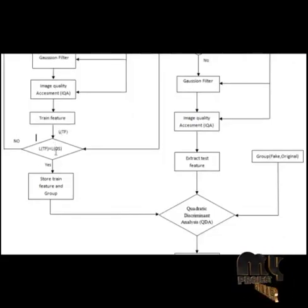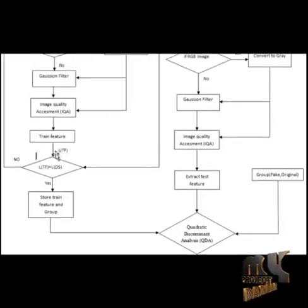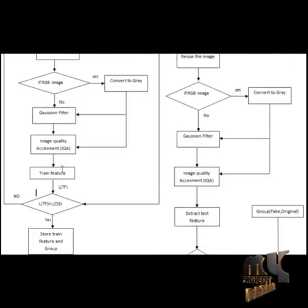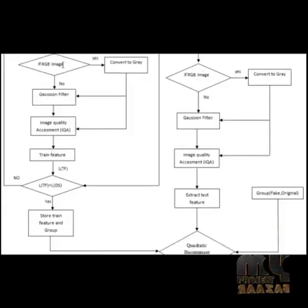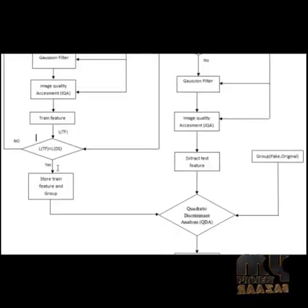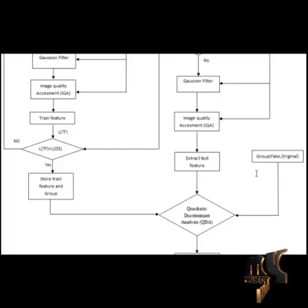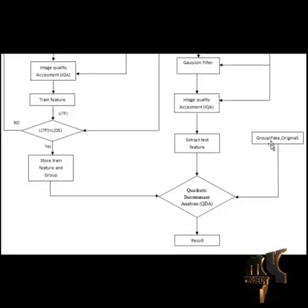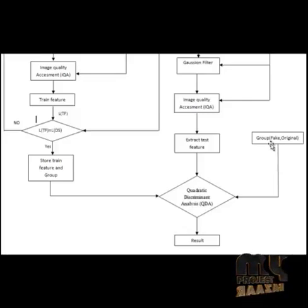We then check the length of the trained feature. If it is not equal to the dataset length, we load another dataset image and repeat the process. Once equal, we store the trained feature and the group label. There are two groups: fake — the non-authenticated person — and original — the authenticated person.